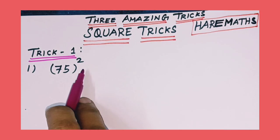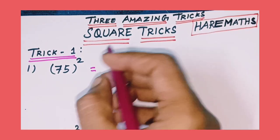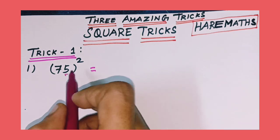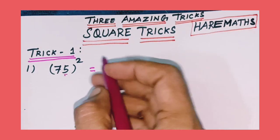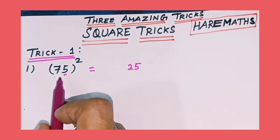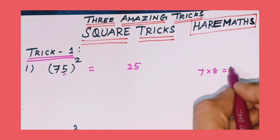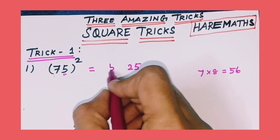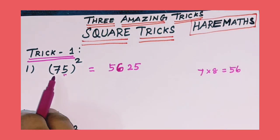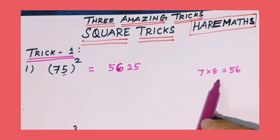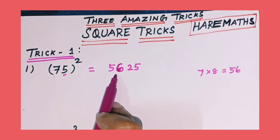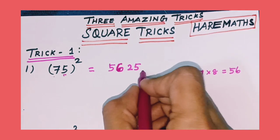First trick: 75 squared. First step — 5 is the unit digit. Square the unit digit: 5 squared is 25. Second step: the next digit is 7, and 7's next number is 8, so multiply 7 into 8 equal to 56. The final answer is 5,625. This is the final answer.